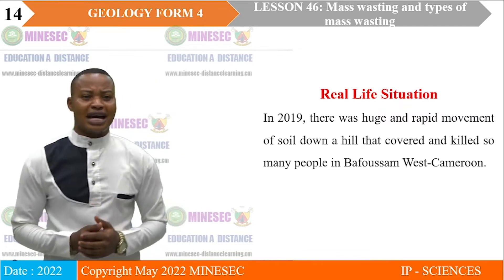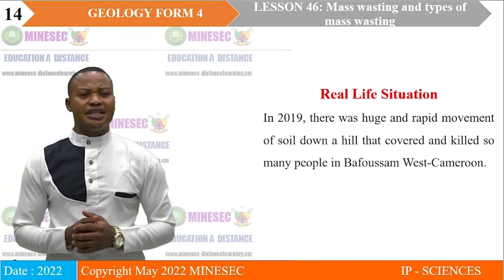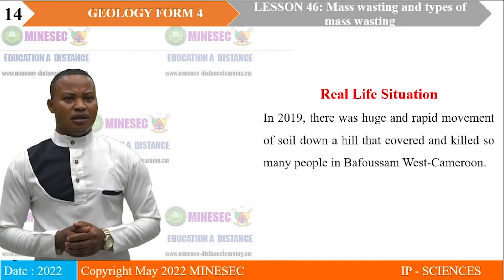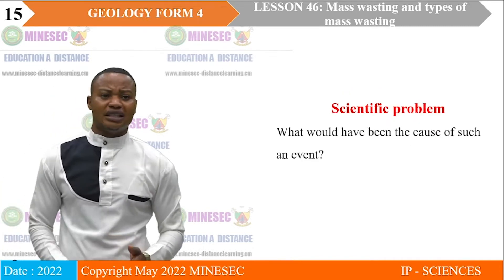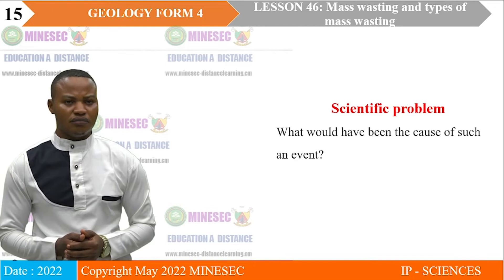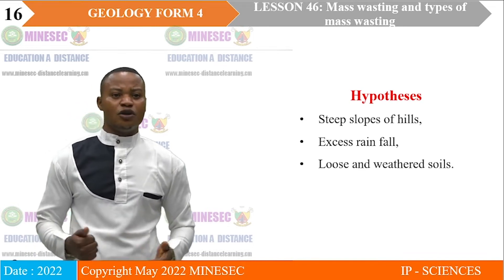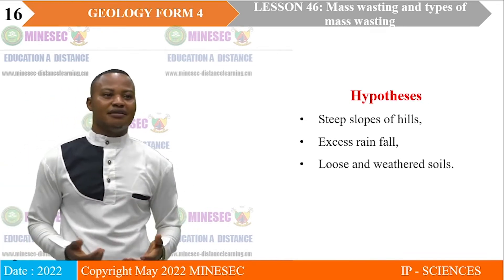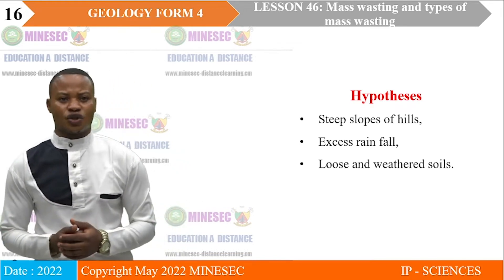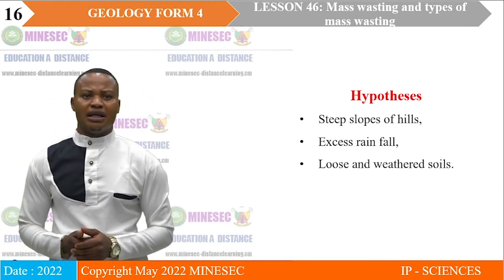In 2019, there was a huge and rapid movement of soil down a hill that covered and killed so many people in Bafoussam, west region of Cameroon. The scientific problem we are asking is: what would have been the cause of such an event? Can it be steep slopes of hills? Can it be excess precipitation or rainfall? Can it be loose and weathered soils? We are going to examine this at the end of our lesson 46.